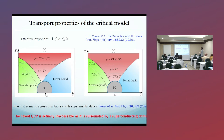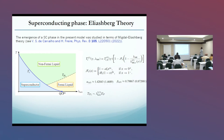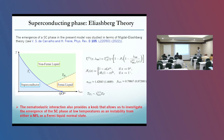We studied also this superconducting phase using Migdal-Eliashberg theory, and these results were published. Here I show the phase diagram of temperature as a function of lambda lattice — the nematoelastic coupling. The nematoelastic interaction provides a knob that allows us to investigate the emergence of the superconducting phase as an instability of either a non-Fermi-liquid phase or a Fermi-liquid normal state.